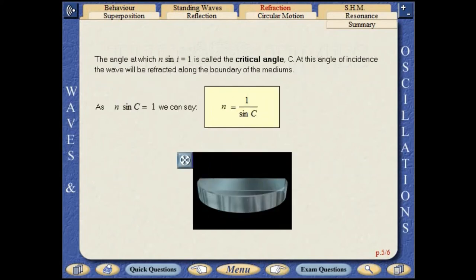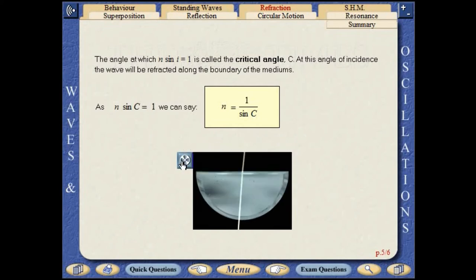The angle at which n sine i equals 1 is called the critical angle. At this angle of incidence, the wave will be refracted along the boundary of the mediums.